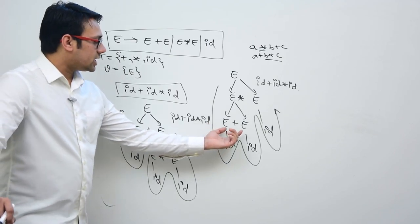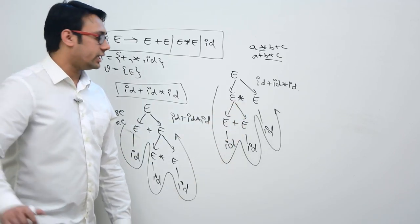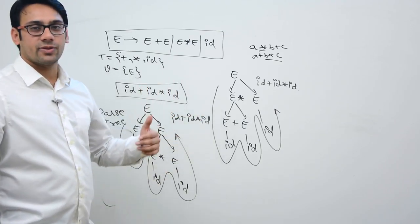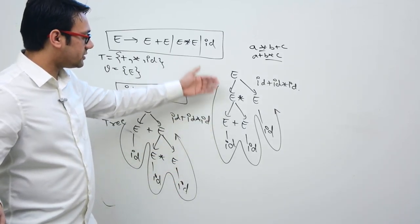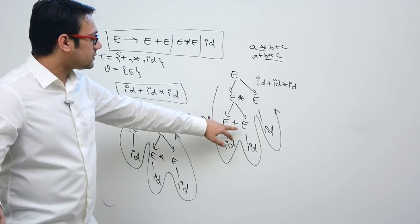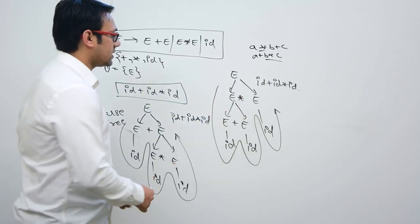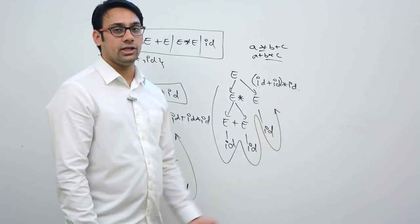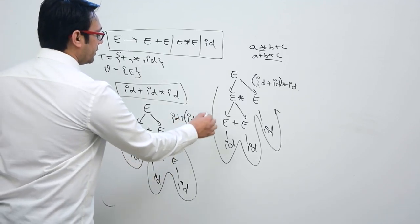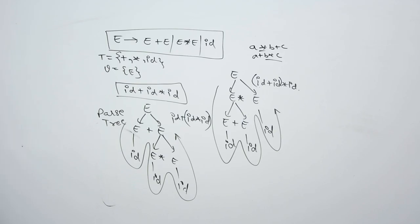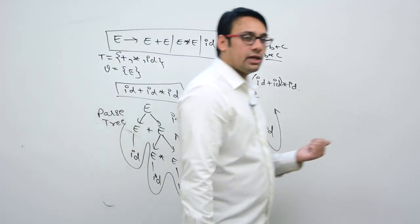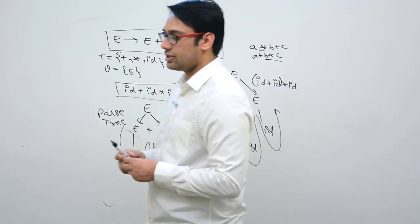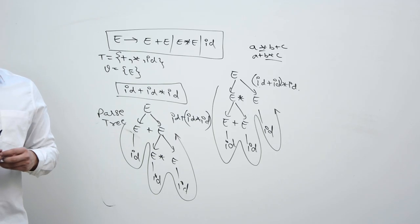Unless we do this multiplication, we will not be able to perform this addition. Therefore, multiplication is having higher precedence compared to addition. But in the other parse tree, unless we perform this addition, we will not be able to do this multiplication. In this expression tree, plus is having higher precedence than multiplication. Because these two operations have different precedence in both parse trees, that is one thing which makes this grammar ambiguous.